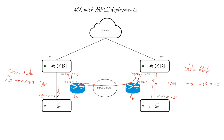That's how you configure two security appliances across two different branches with the MPLS circuit. Bear in mind: you connect it on the LAN side and use a static route. What kind of static routes can you use, and what modes are available? That's what we're going to cover in the next video.